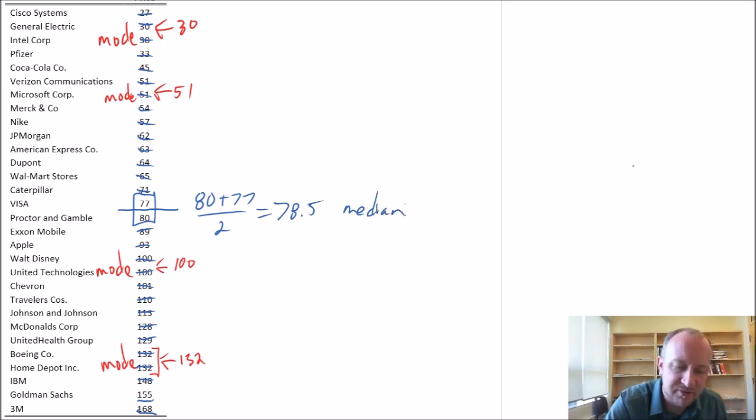So half of my observations are less than 78.5 and half are greater than 78.5. We've got our modes—four modes, multimodal—and our median. Now let's calculate our mean.